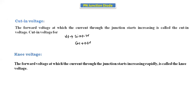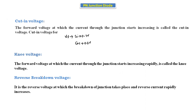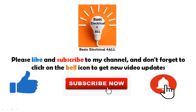Knee point: the forward voltage at which the current through the junction starts increasing rapidly is called the knee voltage. The point where the current starts increasing rapidly is the knee point. Reverse breakdown voltage, indicated by VBR: it is the reverse voltage at which breakdown of the junction takes place and the reverse current rapidly increases. This is about the VI characteristics of the PN junction diode.